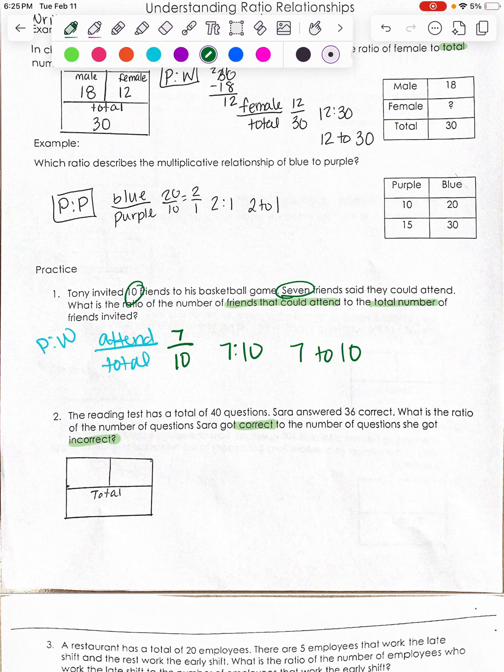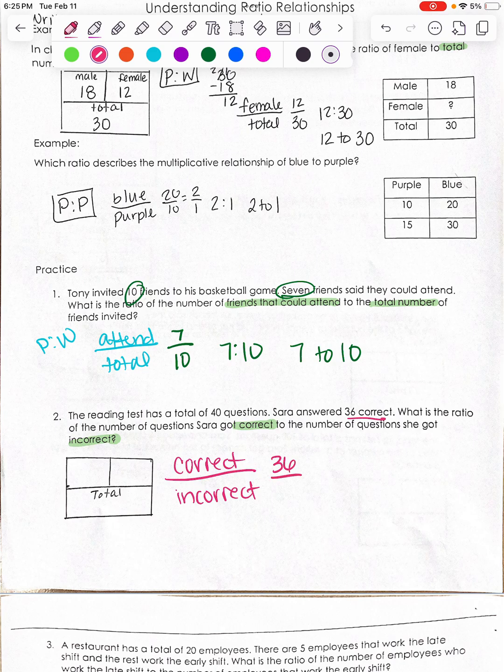So I'm going to just come over here and I'm going to write correct, incorrect. Now it tells me she got 36 correct. But it did not tell me how many she got incorrect.